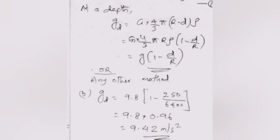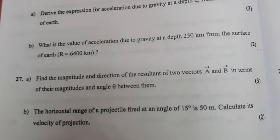Part B: g_D equals 9.8 times (1 minus 250/6400), which equals 9.8 into 0.96, giving g_D equal to 9.42 m per second squared.